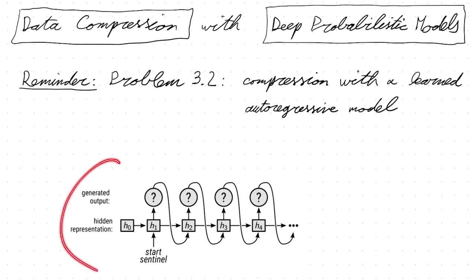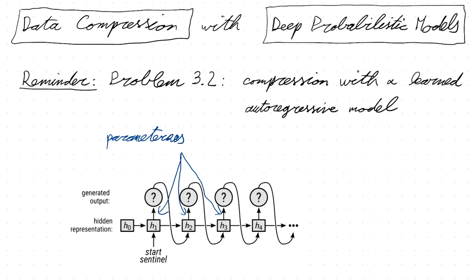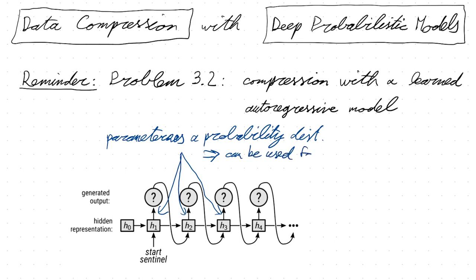We've discussed something like this already in this course. For example, on problem set 3, problem 3.2, you developed a compression method that uses a deep probabilistic model — specifically a so-called autoregressive model — to perform compression. This autoregressive model generates symbols one after the other, always conditioned on some hidden state that evolves with each step. These arrows represent a non-deterministic relationship: the hidden state parameterizes a probability distribution.